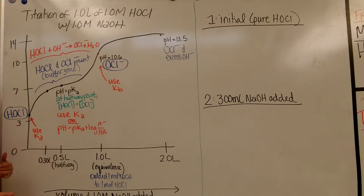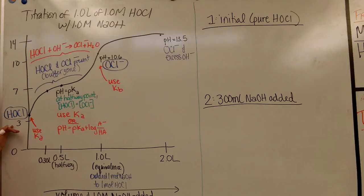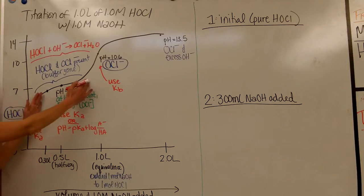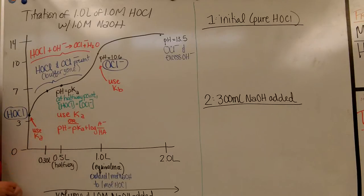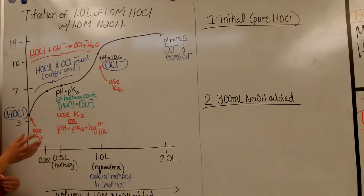Thinking about how to find the pH at various points along the way: initially, if you're asked to find the initial pH, it is just a solution of pure weak acid — use your Ka value and set up an ICE chart to solve for your H⁺ concentration. If you're in the middle part, you've got both the weak acid and the conjugate base present, so you can still use your Ka expression and do an ICE chart. You'll just have initial values for both your acid and your base set up in your ICE chart.